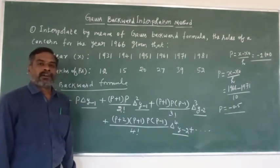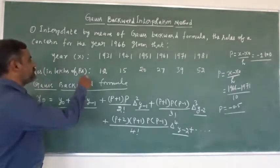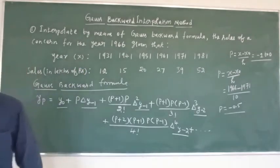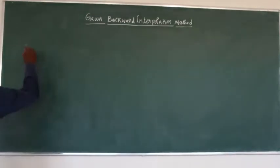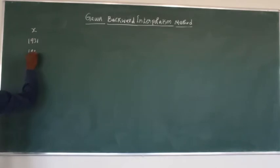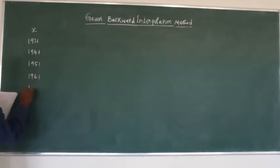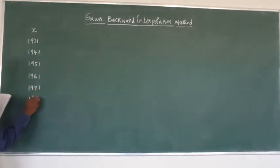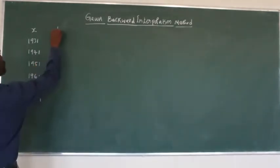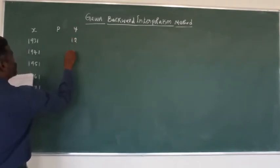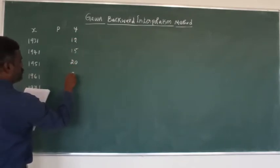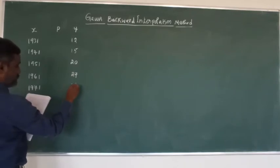First we have to find out the difference table of the given x and y values. The x values are 1931, 1941, 1951, 1961, 1971, and 1981. The corresponding y values are 12, 15, 20, 27, 39, and 52.